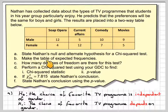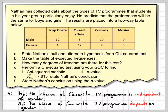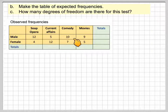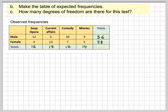Next, we need to make a table of expected frequencies and look at the degrees of freedom. The values collected are called the observed values. We take the observed frequencies, add a totals column, and work out the total of each row: 36 and 28. Then each column: 16, 17, 17, and 14. These row and column totals should add up — this is sometimes known as a two-way or contingency table.